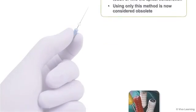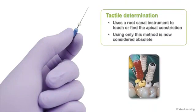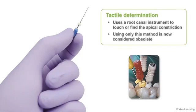On the other hand, tactile determination uses a root canal instrument to touch or find the apical constriction. Because success with this method requires a great deal of experience and sensitivity, using only this method is now considered obsolete.